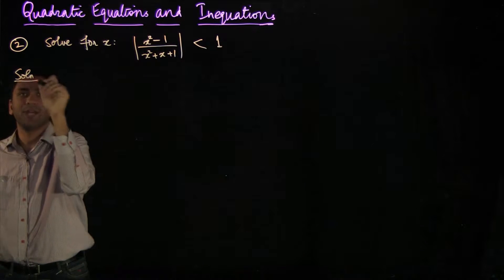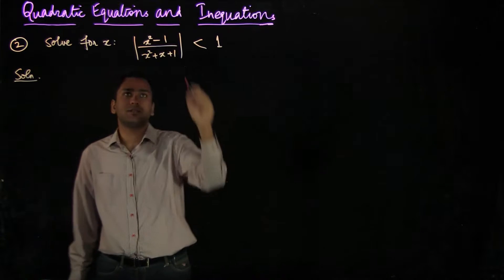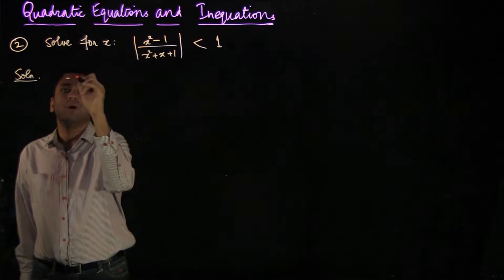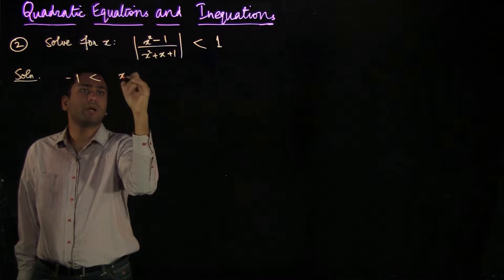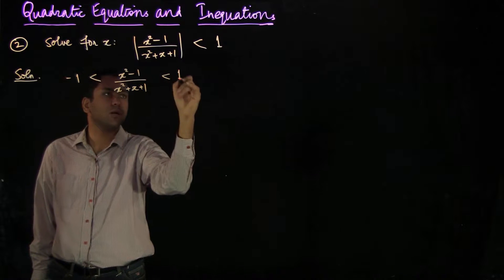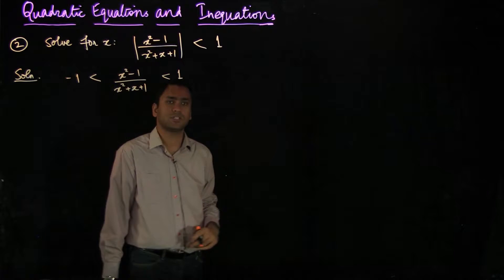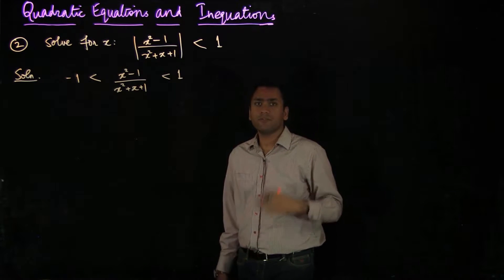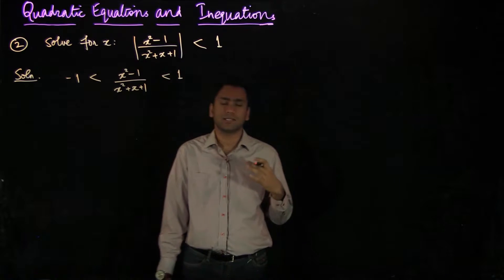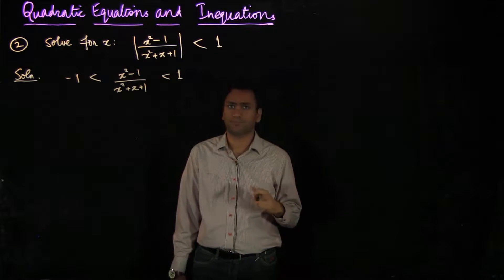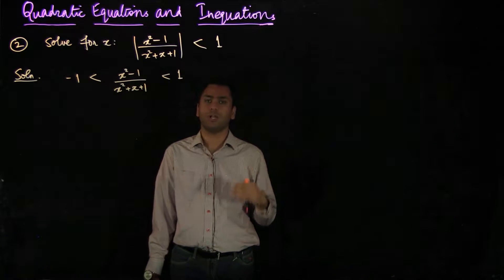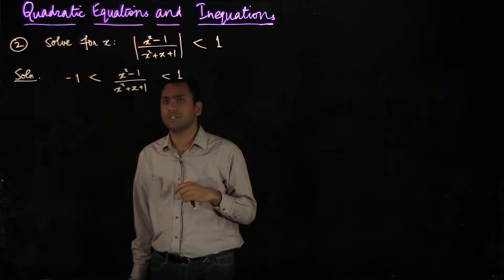Because the absolute value is less than 1, the argument can lie between minus 1 and 1. So, minus 1 is less than x squared minus 1 over x squared plus x plus 1, which is less than 1. There is an important thing to remember for inequalities: if you multiply both sides by a positive number, the sign of the inequality does not change. However, if you multiply or divide both sides by a negative number, then the sign of the inequality would change.